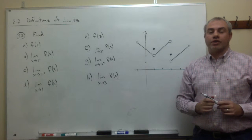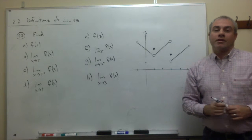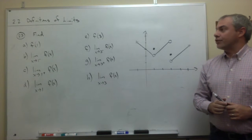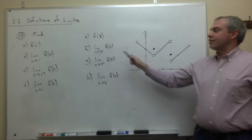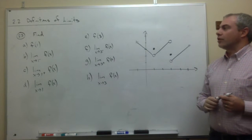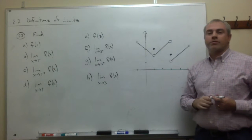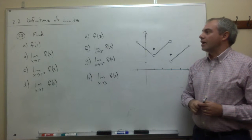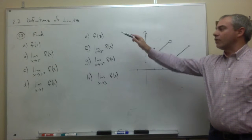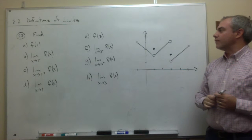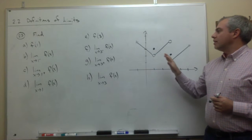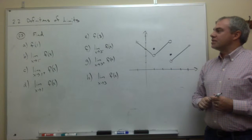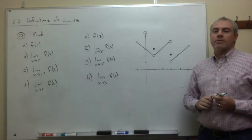In this next video let's look at section 2.2 number 23, which asks us to find a lot of things. I haven't included all the parts on number 23 — I'll leave a few of them for you to look at yourself — but we have all these different things that we need to find based on the graph that we have right here.